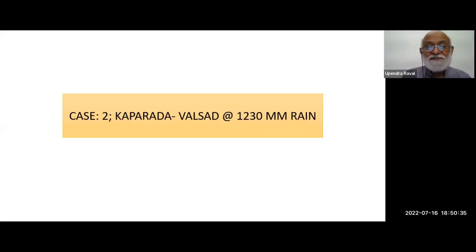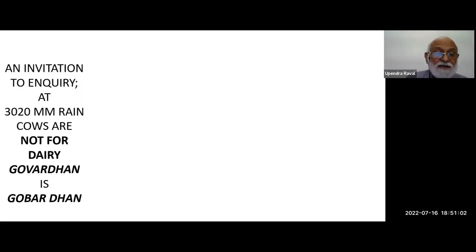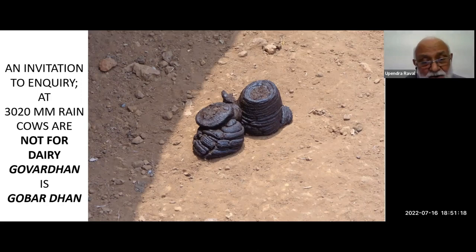This was the second case — an invitation to inquiry. At 3,000-plus millimeters of rain, cows are not for dairy. The Govardhan story — it comes from Govardhan — it is the cow dung that is your actual wealth. I saw a cow dropping dung which never flattened — so there was no water. I asked the local people why there is no water and what they do with the milk. They said they don't use the cow for milk — not for dairy, but for agriculture.